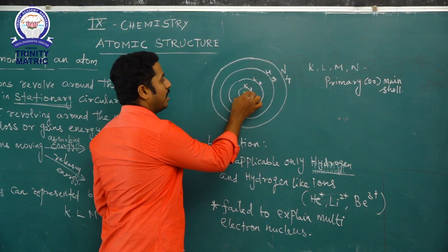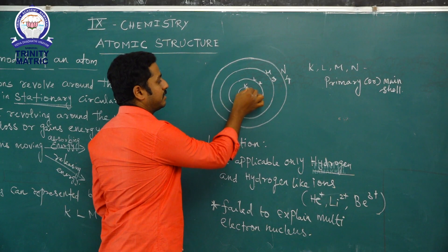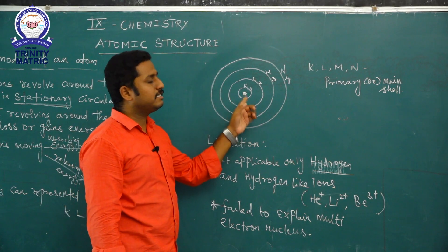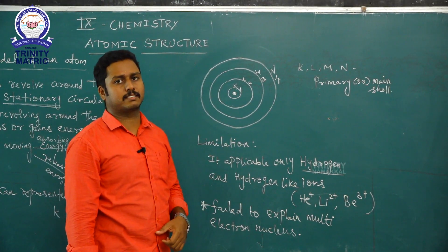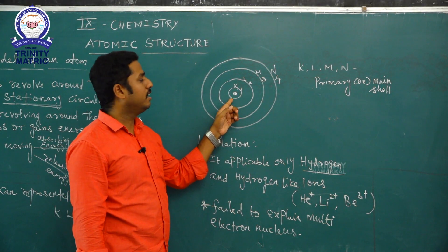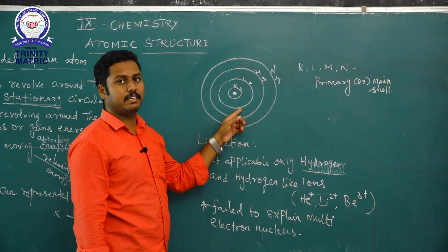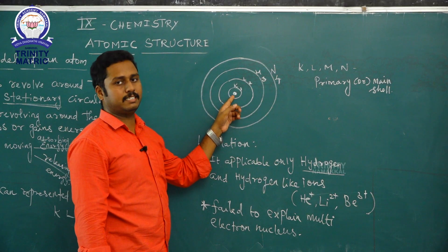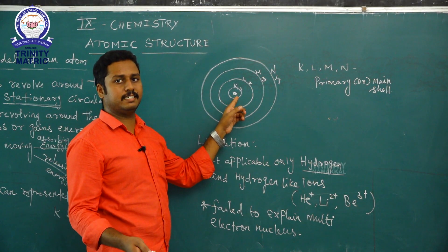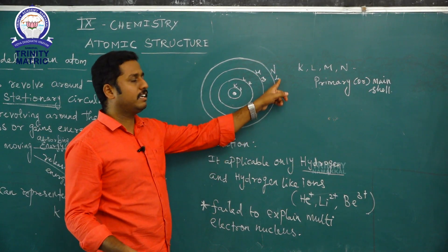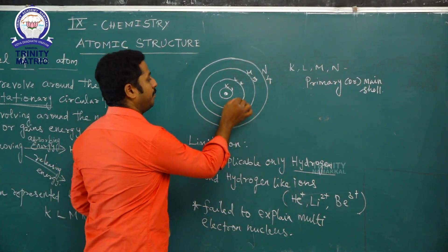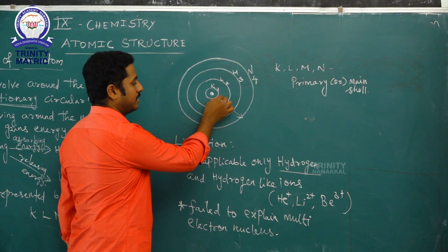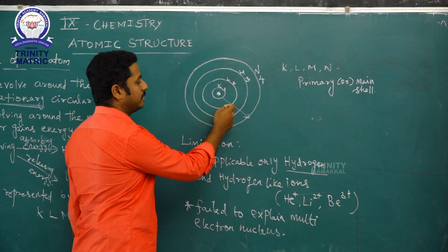Regarding energy: the K shell, being nearest to the nucleus, has the least amount of energy. As the distance from the nucleus increases, the energy also increases. So K has the least energy, L has somewhat higher energy, M is higher still, and N has the highest energy among these shells.